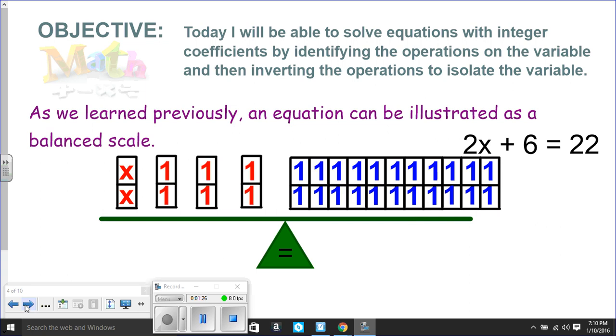Let's start unwrapping that variable. That 2x plus 6 equals 22. Here's our two x's. Here are six ones. And on the other side are 22 ones.